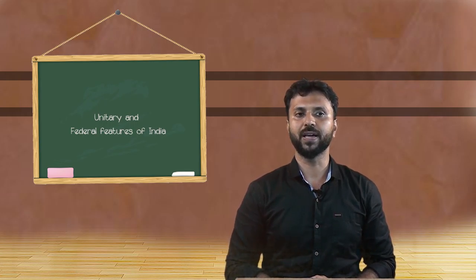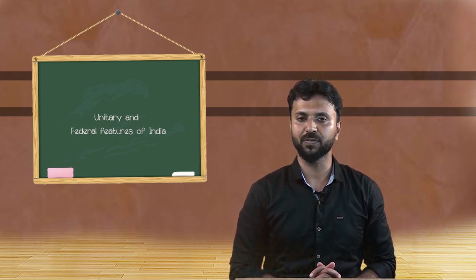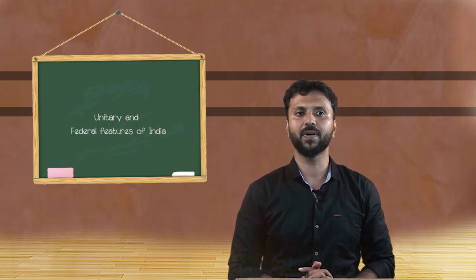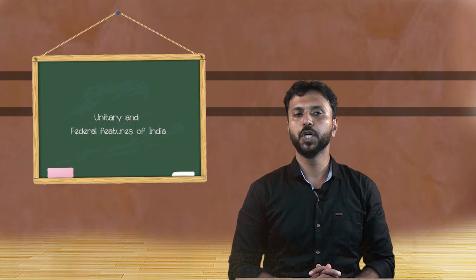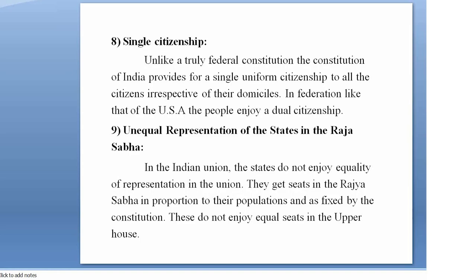India has a single constitution throughout the nation. The Indian constitution is a single unified common constitution for the union as well as for the states. The states, with the exception of Jammu and Kashmir, do not have separate constitutions. Another unitary feature is single citizenship — unlike a truly federal constitution, the constitution of India provides for single uniform citizenship to all citizens irrespective of their domicile. In federations like the USA, people enjoy dual citizenship, but in India, we have single citizenship.